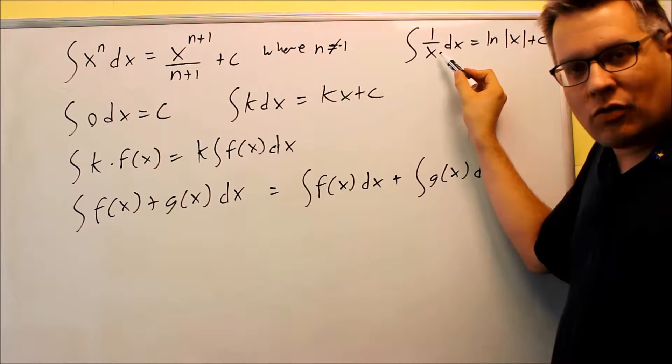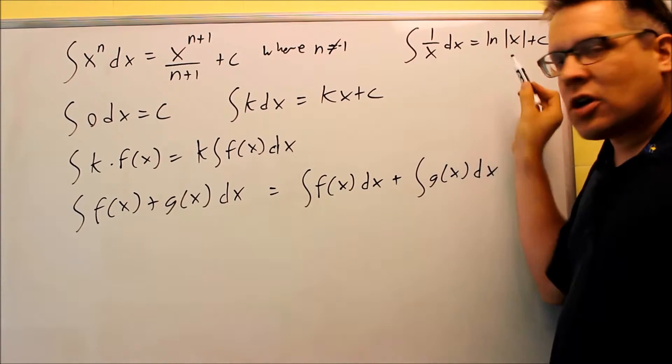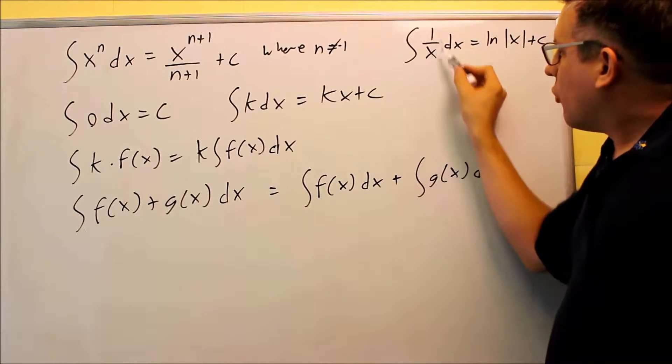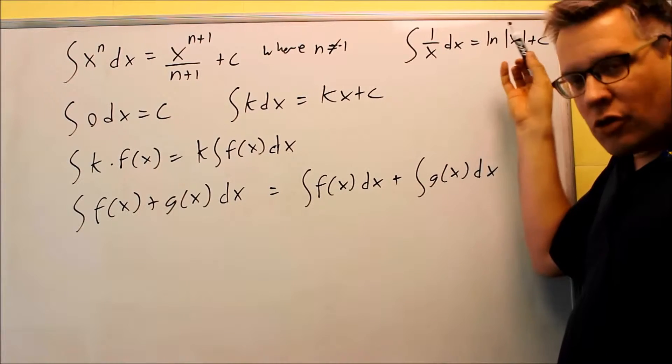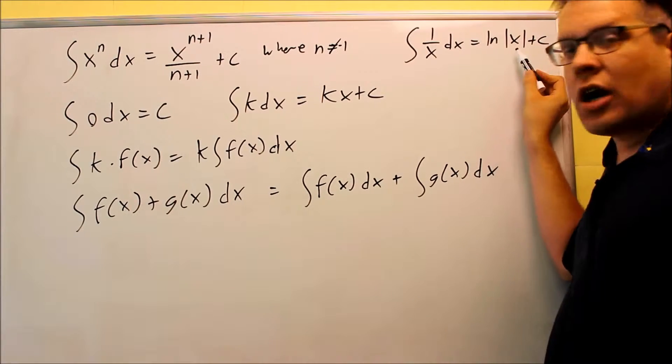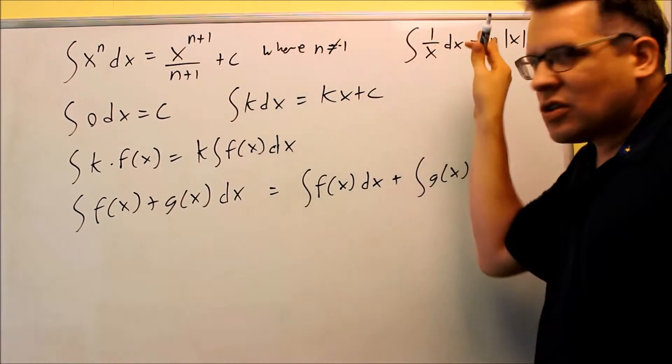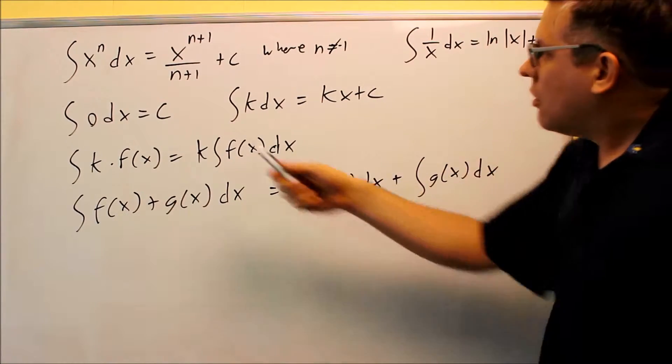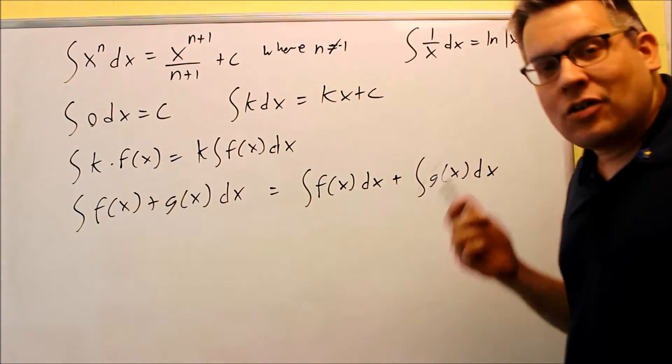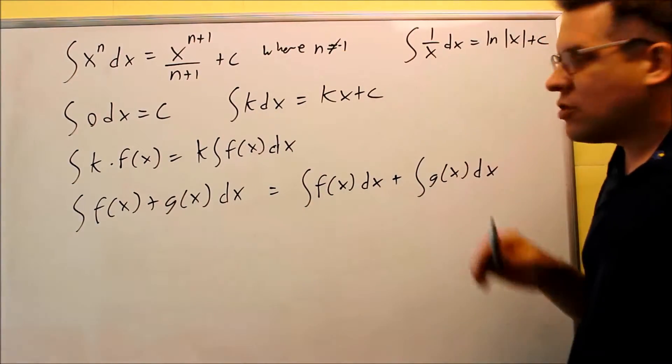That actually is the case right here. So if you have the integral of one over x, that would be the same thing as x to the negative one. However, that has a special derivative. If you have the integral of one over x dx, the anti-derivative is going to be natural log of the absolute value of x plus c. So we have these two situations set where you have x raised to any integer, we know what the anti-derivative is going to be.